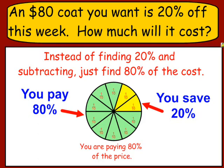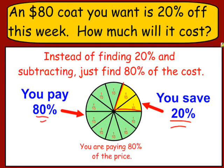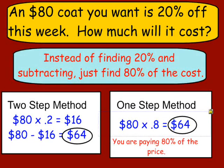Now let's look at this example. An $80 coat you want is 20% off. How much will it cost? There are a couple of different ways we can do this. When you have 20% off, that means you're saving 20% — you don't have to pay 20% of the cost of the item, but you do have to pay 80% of the total cost. We can solve these questions in either one or two steps.